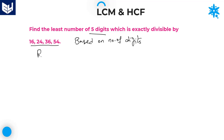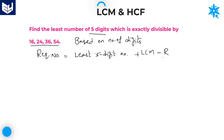Our required answer, as like the previous problem, is: least five-digit number plus LCM minus remainder. The least five-digit number is 10,000. Now you can calculate the LCM of these numbers — that is 16, 24, 36, and 54.